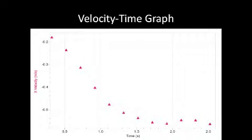For the second graph, we're looking at the velocity-time graph. On the y-axis we have velocity, and on the x-axis we have time. For the first about one and a half seconds, the car is accelerating — you can see it's a slanted line. For the rest of the time through that first meter, it levels out because it has a constant velocity.